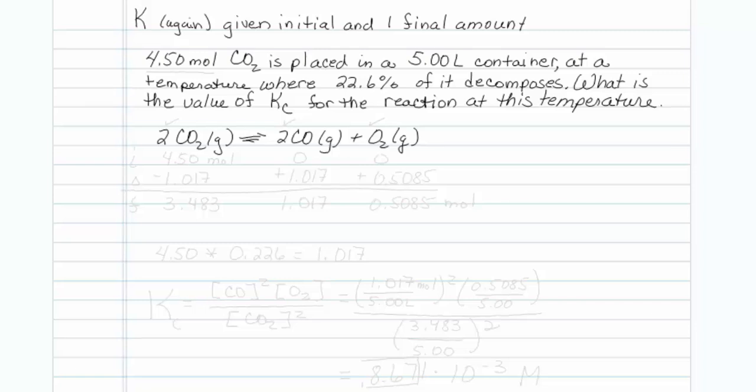How to determine K given an initial amount and one final amount, or the amount that decomposes. We have 4.5 moles of CO2 placed in a 5 liter container at a temperature where 22.6 percent of it decomposes, according to the reaction shown. What is the value of Kc for the reaction at this temperature?